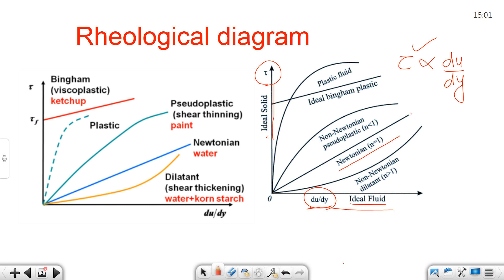Most general fluids come into the category of Newtonian fluids — like water, air, kerosene, and glycerine. All fluids other than these are non-Newtonian, meaning they do not obey Newton's law of viscosity. The study of non-Newtonian fluids is called rheological study — hence the name rheological diagram.